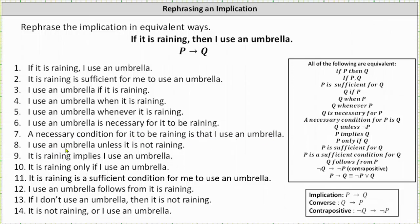Number eight, I use an umbrella unless it is not raining. Number nine, it is raining implies I use an umbrella. Number 10, it is raining only if I use an umbrella.